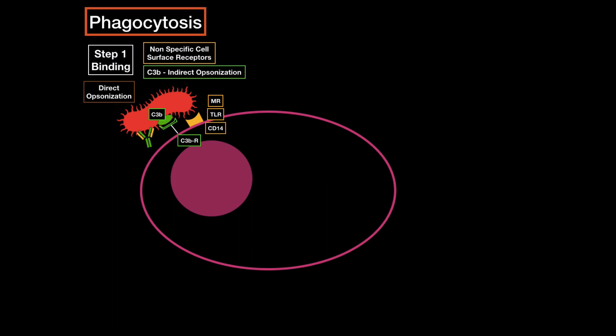The third way is by direct opsonization, where an antibody actually binds directly to the bacteria, promoting phagocytosis, because the phagocyte actually has receptors for the Fc region of the antibody, called Fc receptor. And remember, this only happens due to the adaptive immune response, because everything that includes antibodies are the adaptive immune response, not the innate.